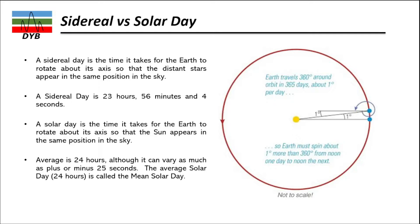The solar day is the time it takes Earth to rotate about its axis until the Sun appears at the same position. The solar day is normally 24 hours, although it can vary by plus or minus 25 seconds, which we will discuss further. So to summarize: the sidereal day is 23 hours 56 minutes and 4 seconds, and the solar day is 24 hours.